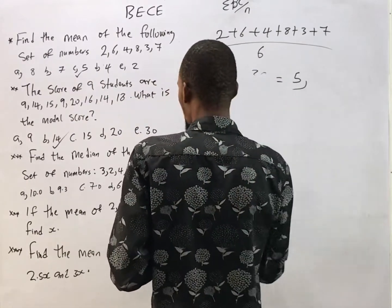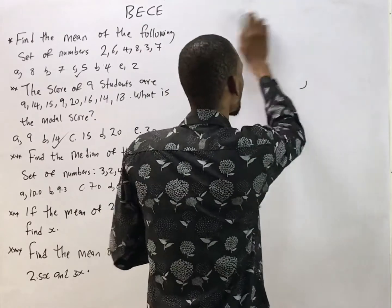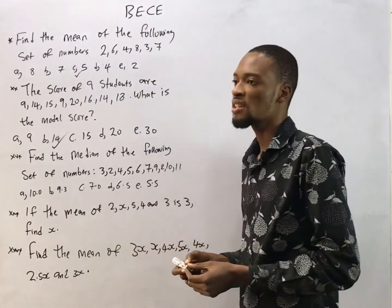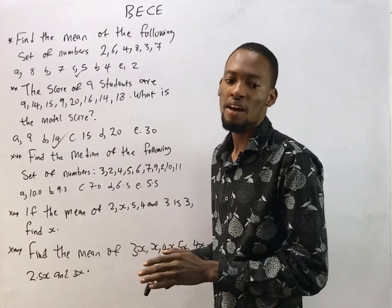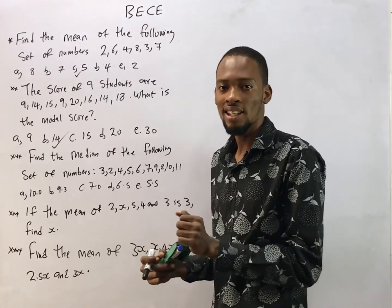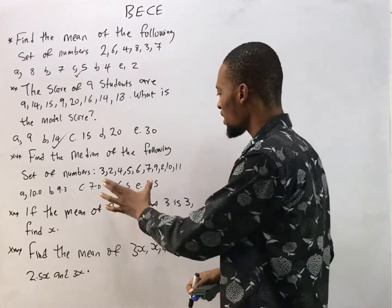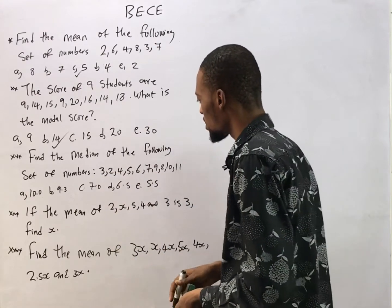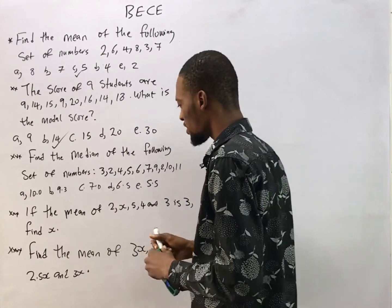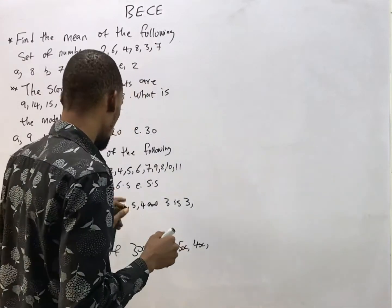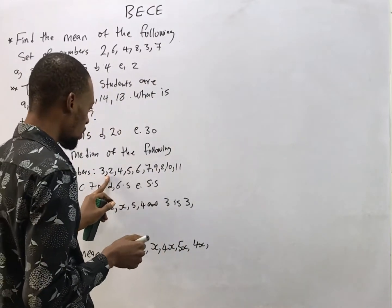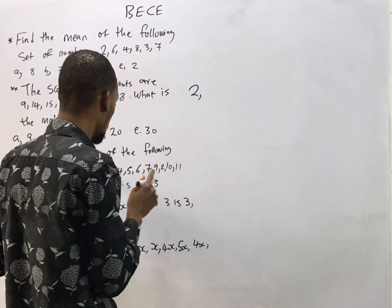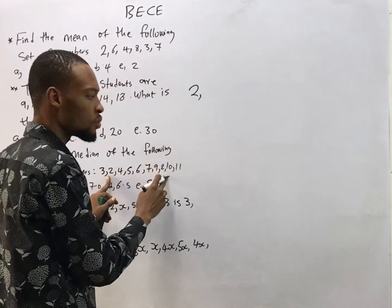The next question says: find the median of the following numbers. The median is simply the middle number after the numbers are arranged in order. So we arrange the numbers in ascending order and check the middle number. Starting: we have two, and another two, so: 2, 2...